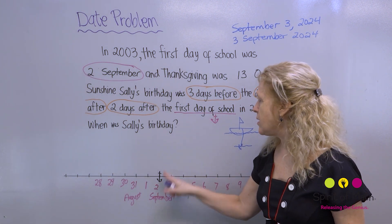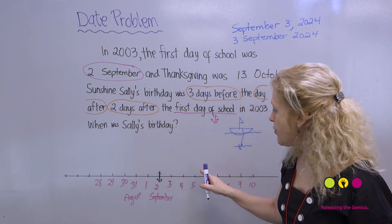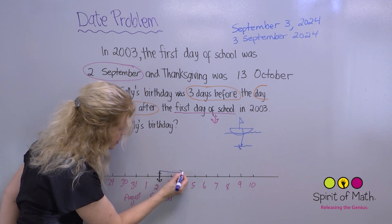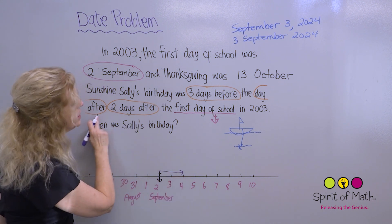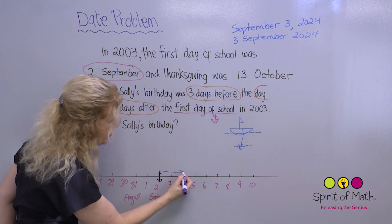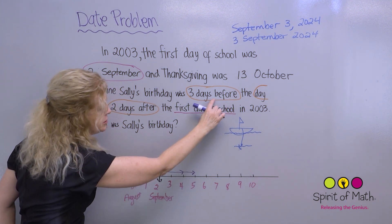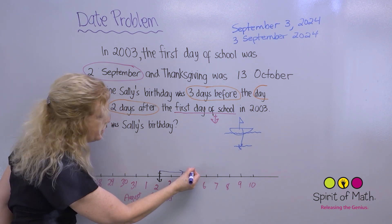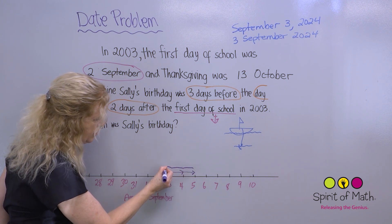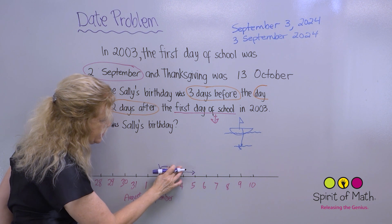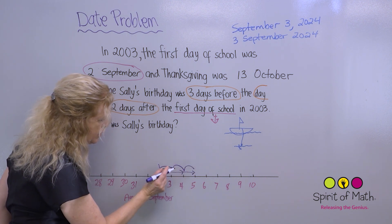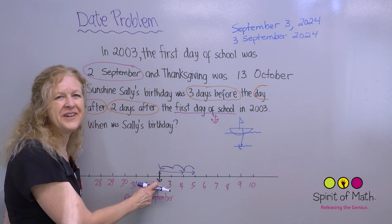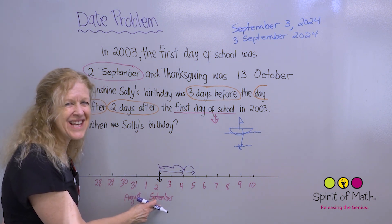So, it says the first day of school is our anchor. Two days after that — I'll show that on the dateline by going two days forward: one, two. That's two days after. Then the day after that, so I go one more. Then it says three days before, so I start there and count three days before: one, two, three. And we're back right to the first day of school — September the 2nd. And that's your answer.